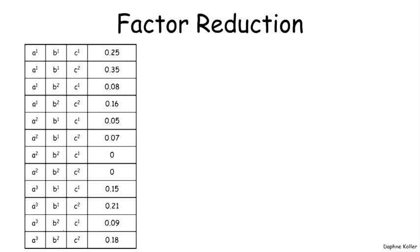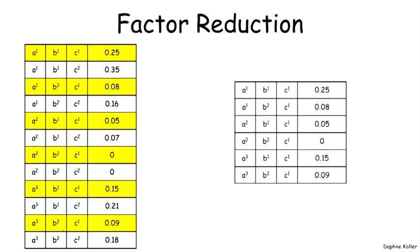Finally, factor reduction. Again, very similar to the context of probability distributions. We want to reduce, for example, to the context C1. So we're going to only focus on the rows that have the value C equals C1. And that's going to give us a reduced factor, which only has C1. And once again, the scope of this factor is A, B, because there is no longer any dependence on C.